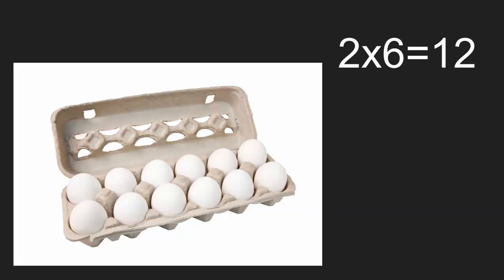Here's another picture of an array. What multiplication problem does it represent? 2 times 6 equals 12. 2 rows, 6 columns equals 12 eggs in all.